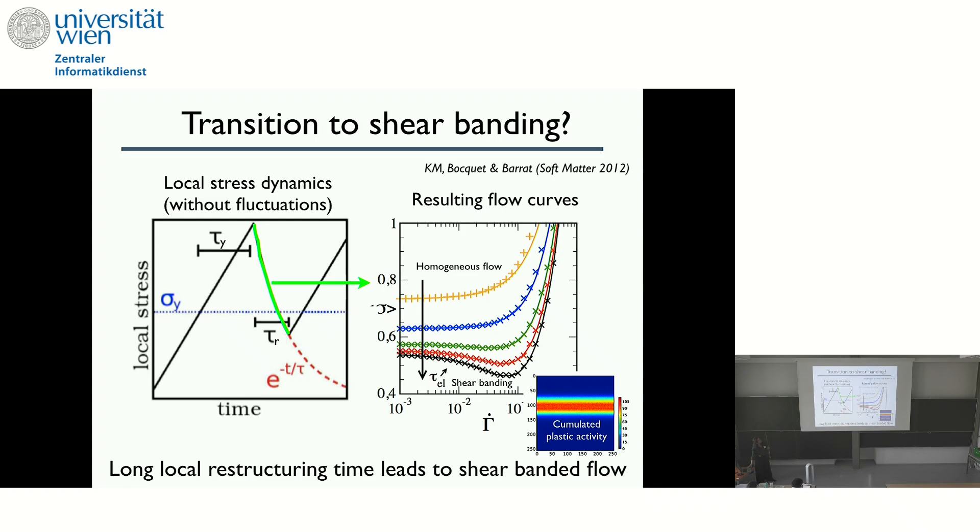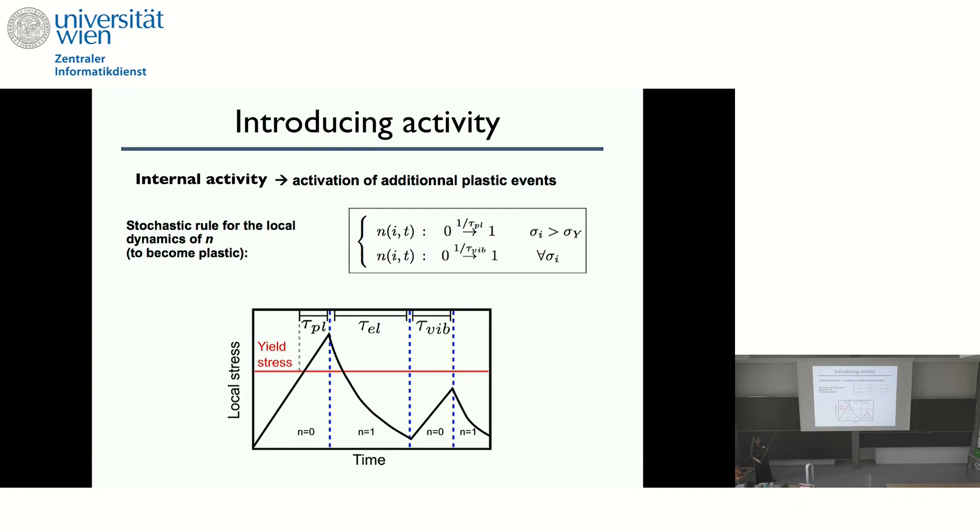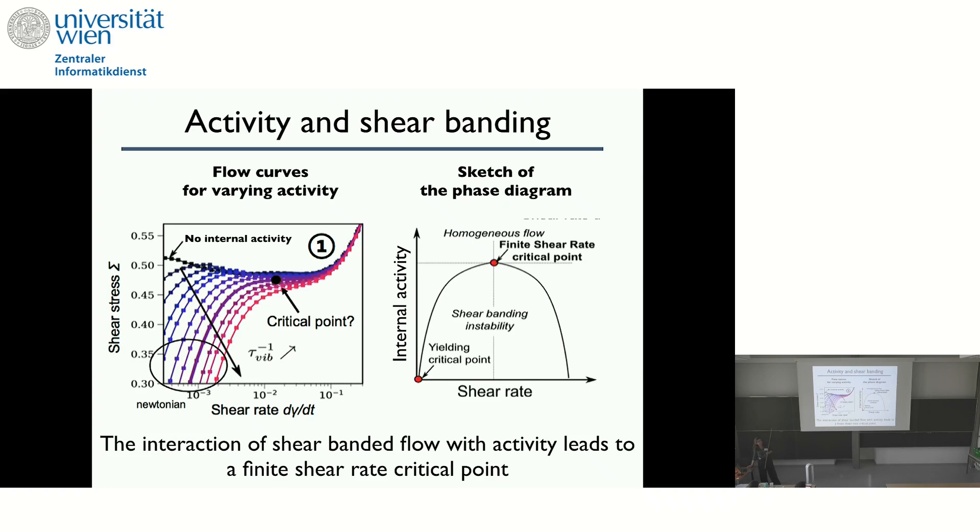So using this, we can then introduce a new activity, which would be the internal one. And again, we take something that is constant. So there is an activation rate, internal activation rate, which we call here tau vib, like vibration in the experiment. And so additionally to the usual yielding above the yield stress, at any time, even for stress lower than the yield stress, you can activate a site and yield. If you do so, you see that you get very similar response as the experiment. So you see that you get the fluidization. That is not a surprise and you can suppress the non-monotonicity in the flow curve. And you see that you create a saddle point and ask the question whether you get also these critical fluctuations.